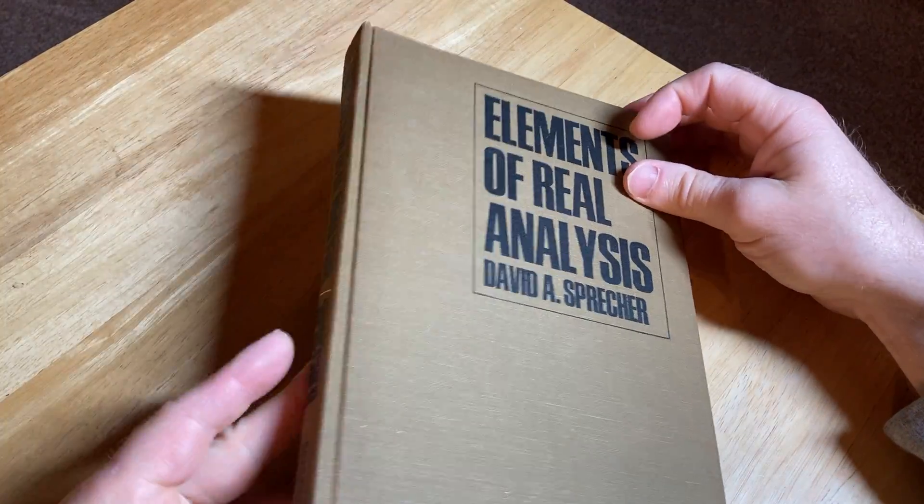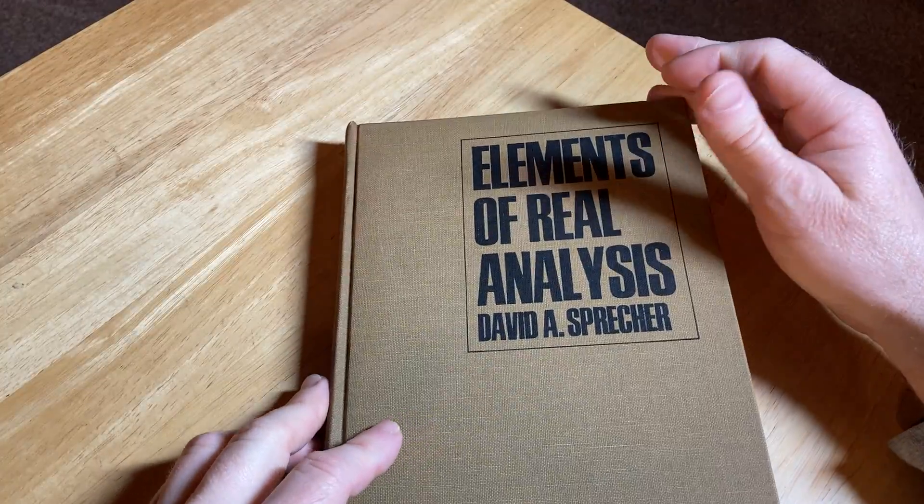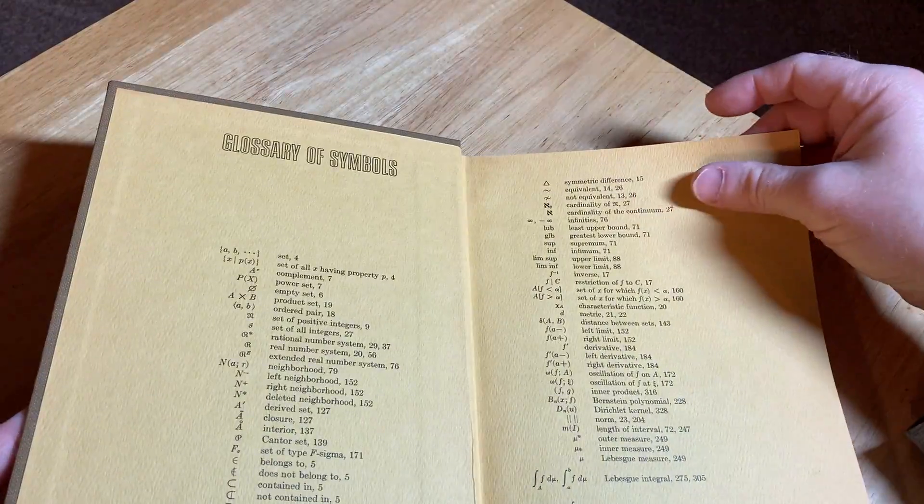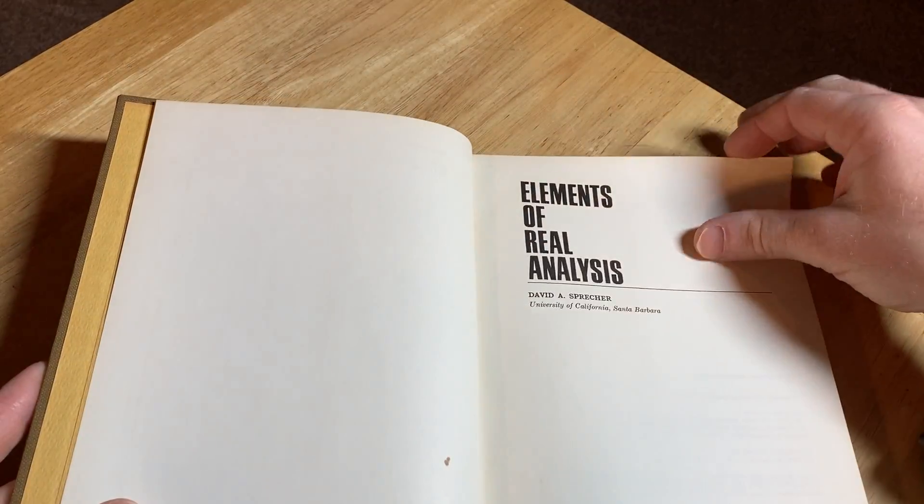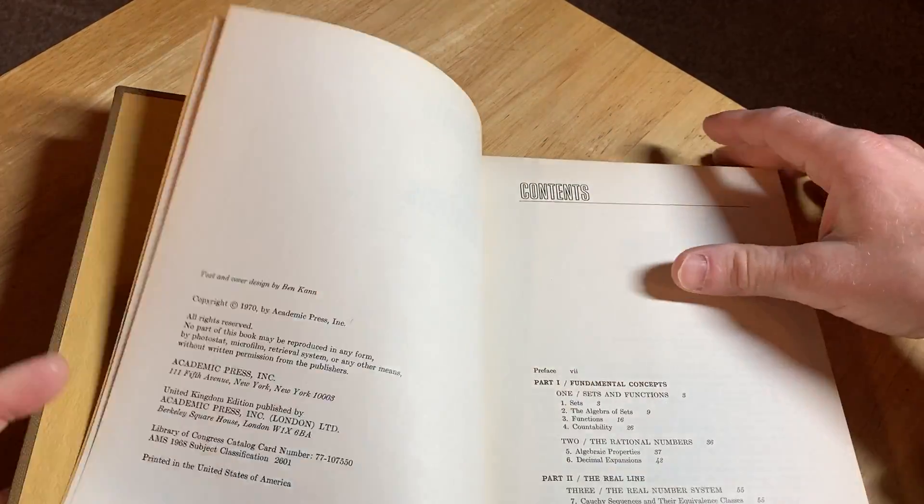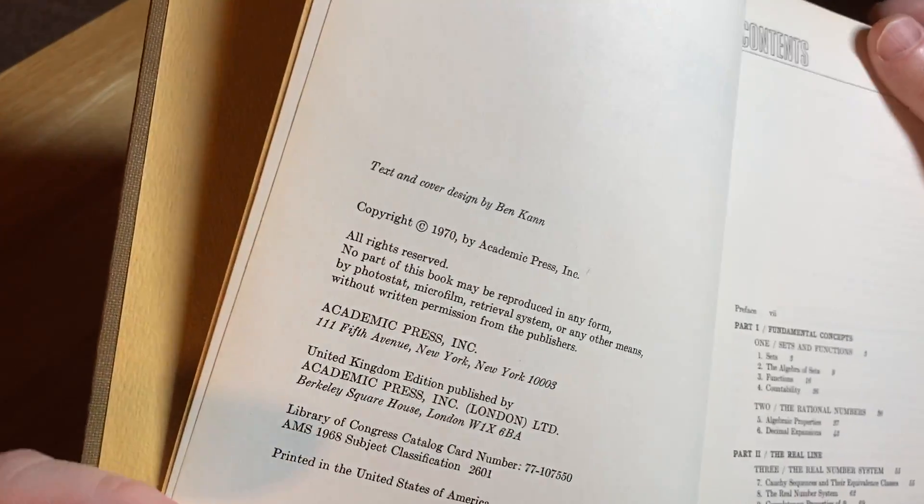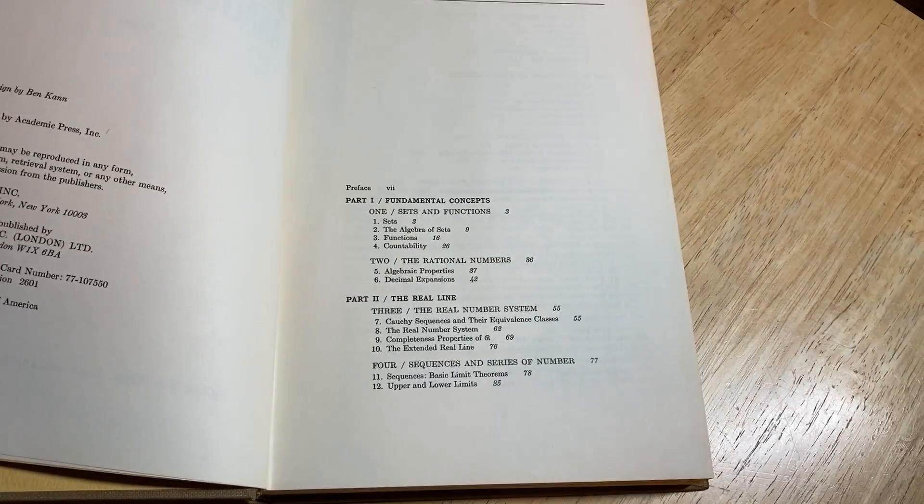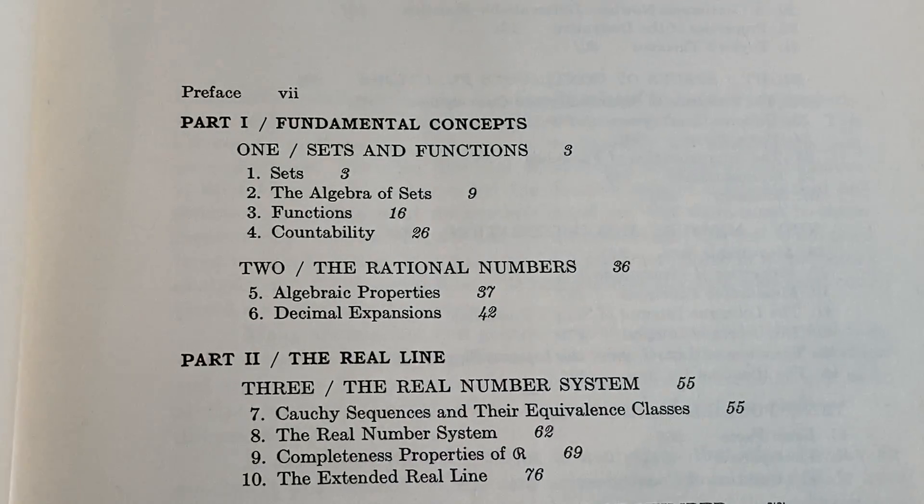Elements of Real Analysis by David Sprecher. This is a book on analysis, it's an older book. The copyright is 1970. Here's the topics so you can see what it contains.